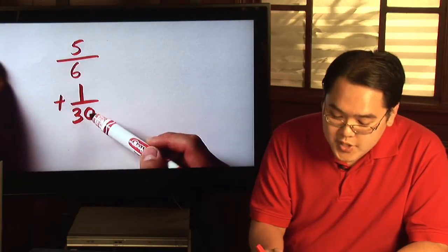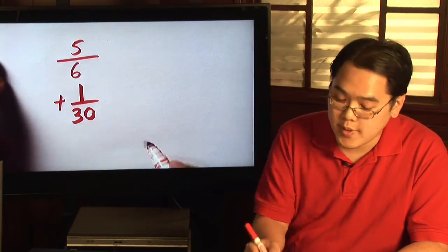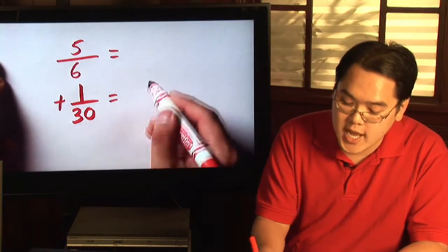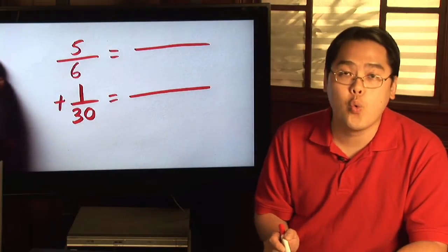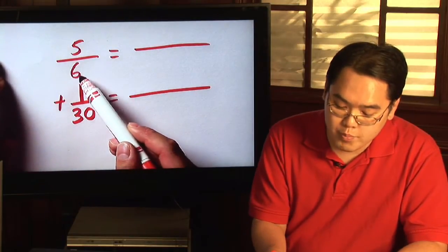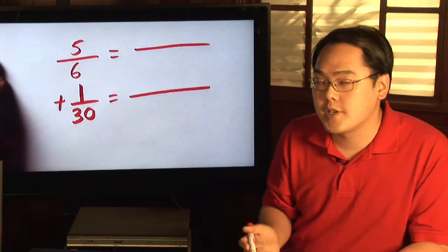However, because the denominators are not the same, you can at least try to find common ground between the two. And this is where something called the least common denominator becomes very important because what you need to ask yourself is what number will both six and thirty go into? That's where the least common denominator comes in.